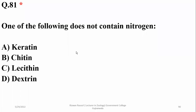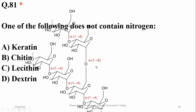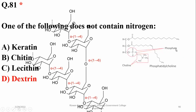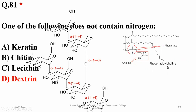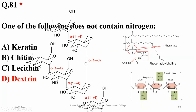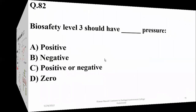Question 81: Which of the following does not contain nitrogen? We know nitrogen is found in proteins, phospholipids, and chitin — a polysaccharide that is nitrogen-containing. The structure without nitrogen gives delta as the answer. Phospholipids and chitin with its acetyl group — this is the second option.